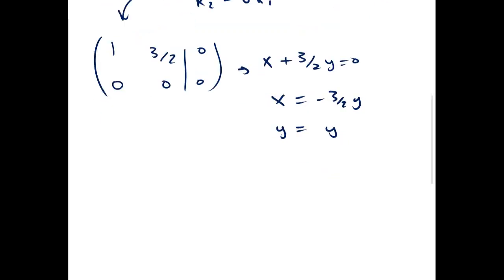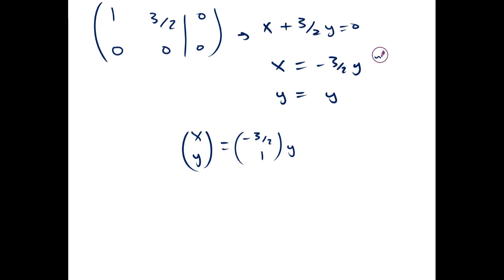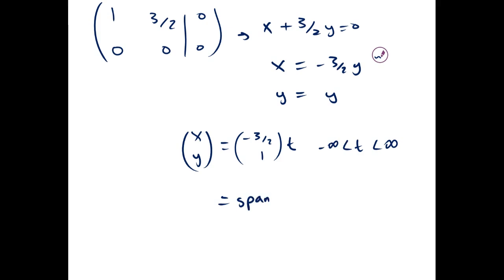With y equals 1, we can parameterize this. x and y has to equal 3 halves times the vector (1, y). We can say t is our parameter, t goes from infinity to negative infinity. This is the same thing as saying that this expression defines the kernel of A.